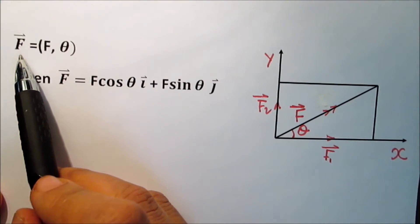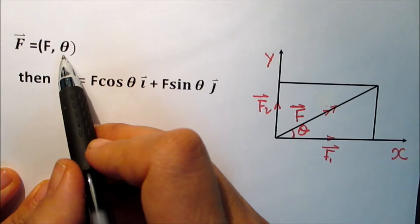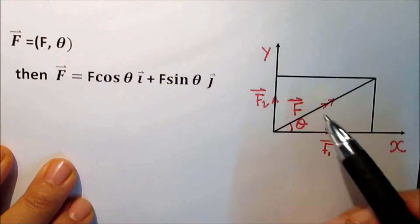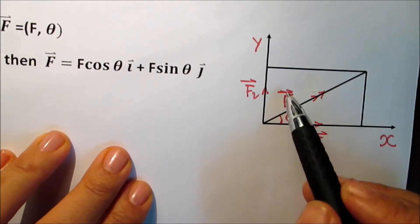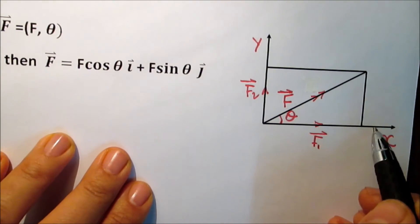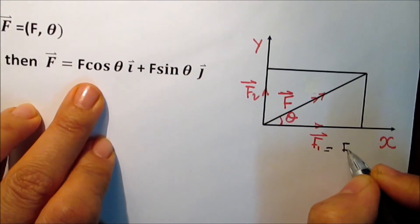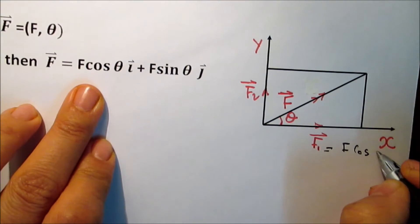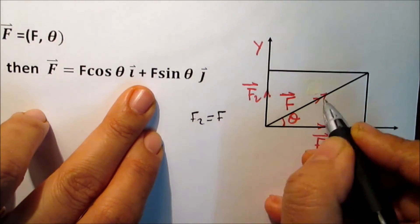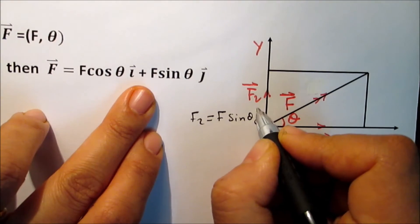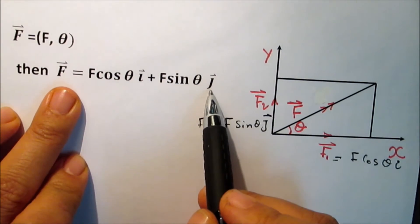Another way to express a force is to give its magnitude and the angle formed with the positive direction of the x-axis. So F with inclination theta degrees means the horizontal component equals F cosine theta in the direction of i, and the vertical component equals F sine theta in the direction of j. Therefore F equals F cosine theta times i plus F sine theta times j.